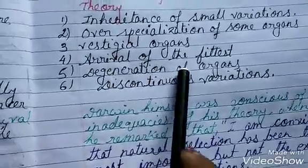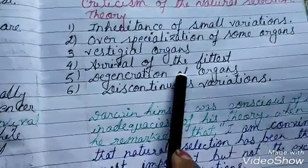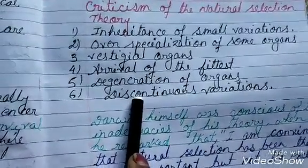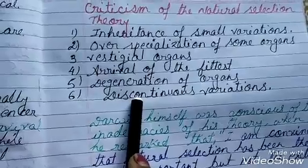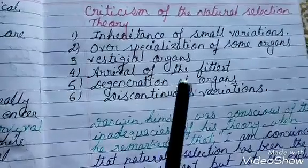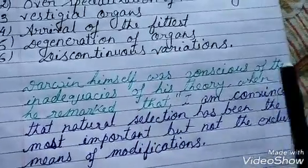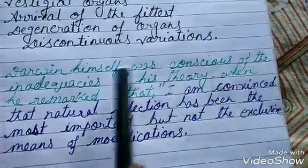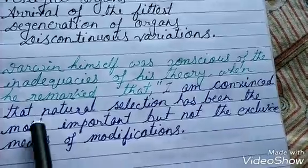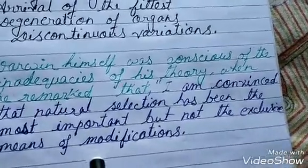Next is degeneration of organs. The theory does not account for the degeneration of certain organs in animals. Also, regarding discontinuous variation, the theory fails to explain the cause of sudden change in the body. The main drawback of Darwin's theory was a lack of knowledge of heredity. Darwin could not differentiate between continuous and discontinuous variation. Darwin himself was conscious of the inadequacies of his theory when he remarked: 'I am convinced that natural selection has been the most important but not the exclusive means of modification.'